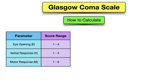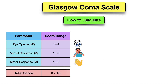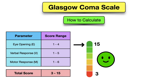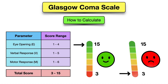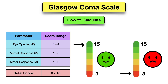The minimum score for each parameter is one. So the score ranges for each parameter are: one to four for the eyes, one to five for verbal, and one to six for motor. The scores for each parameter are then added up to give you a final GCS score. The higher the score, the better the GCS and the better the patient is. The lower the score, the lower the GCS and the worse the patient is.